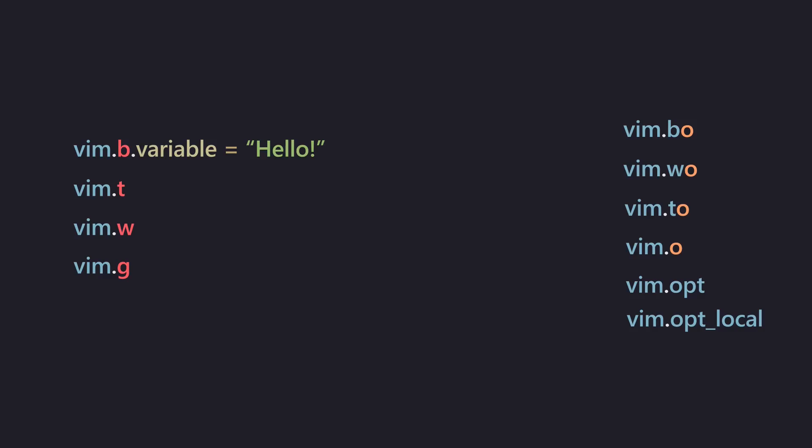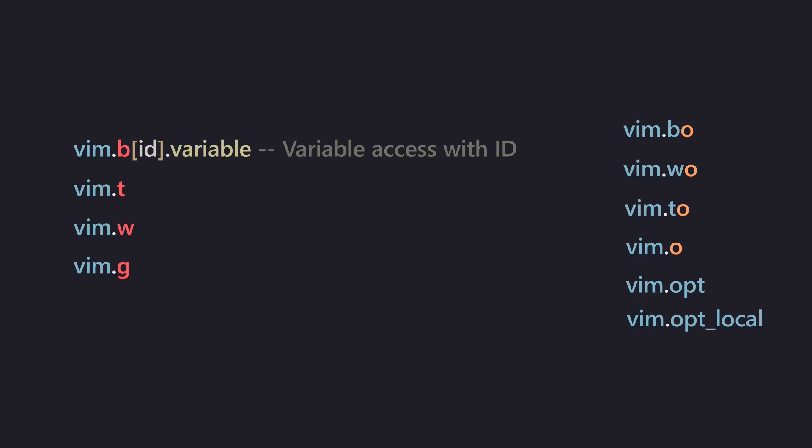I can assign a variable within the vim.b table to a value, and when I want to retrieve it I can use vim.b again, supplying a buffer ID. Each buffer has its own unique number — the same goes for windows and tabs. By supplying the buffer number I can retrieve the value for a specific buffer and use it in code. The vim.g table — the global scope — is used everywhere, so whatever you put in there is accessible from any code within Neovim for the entire runtime.